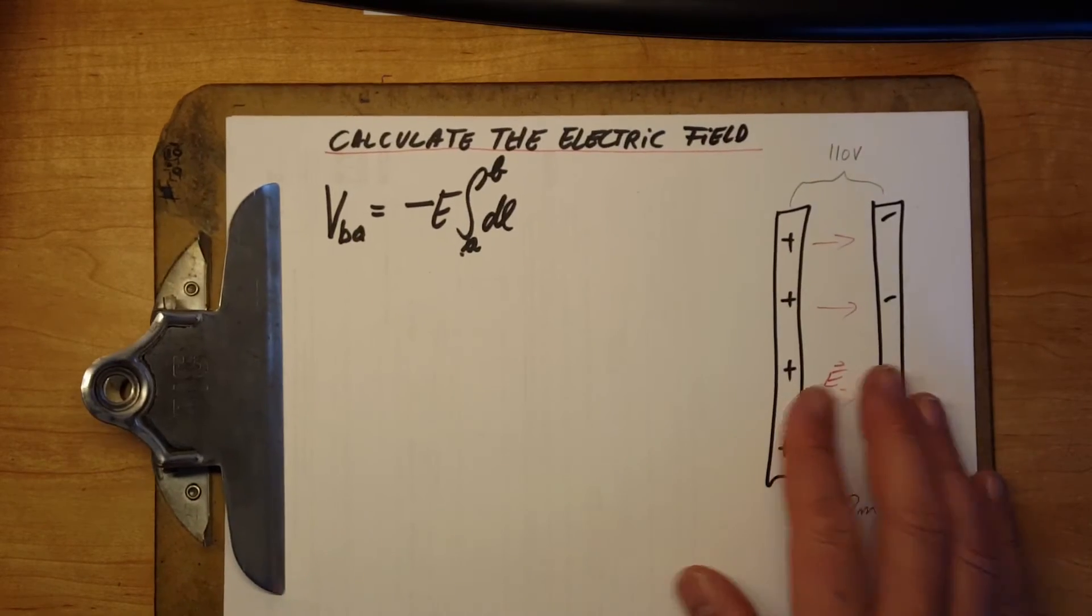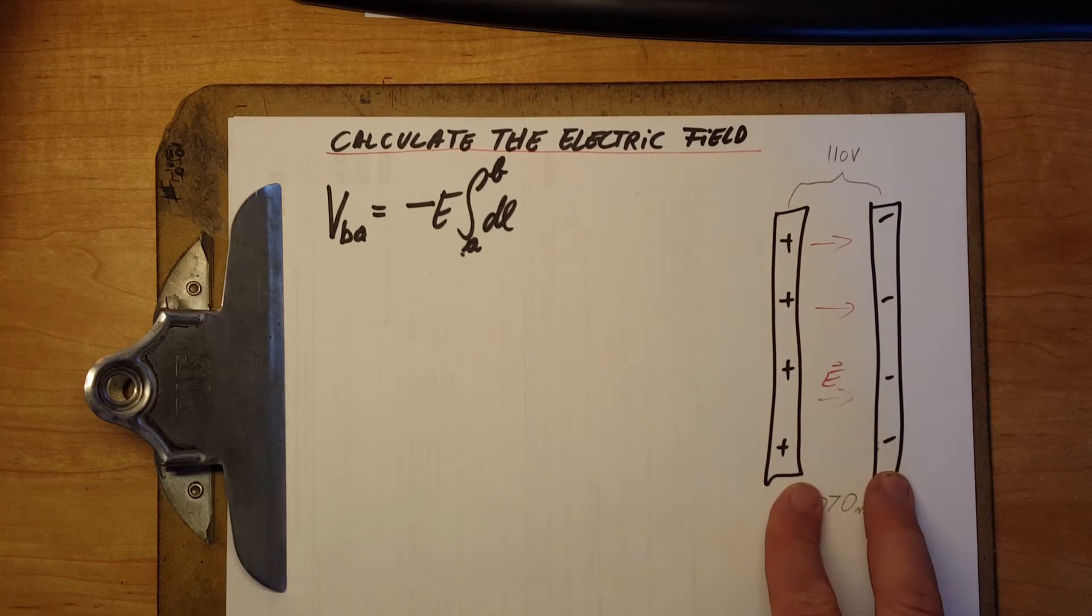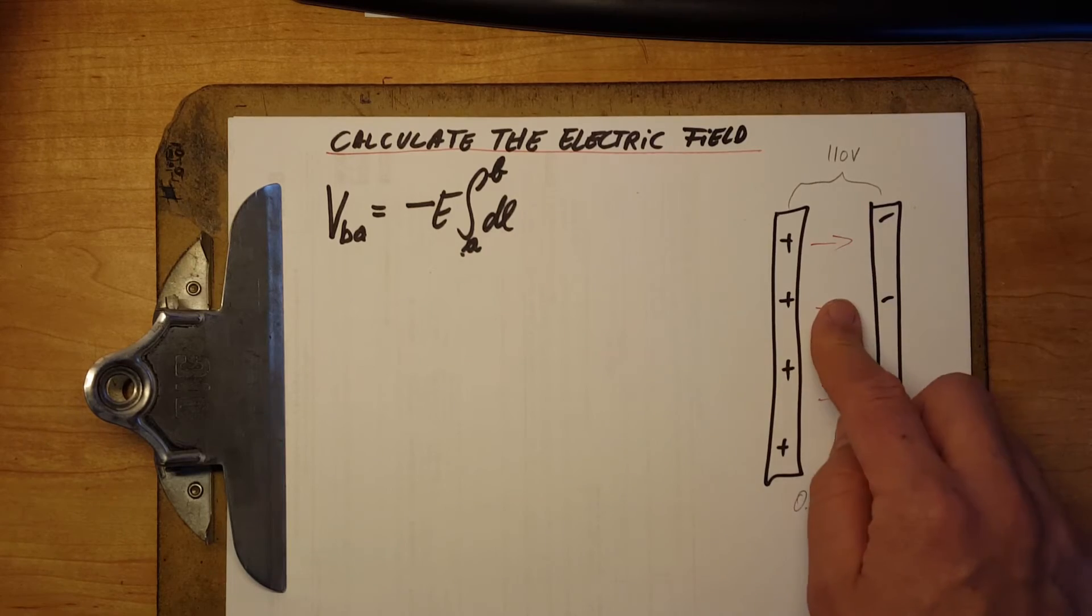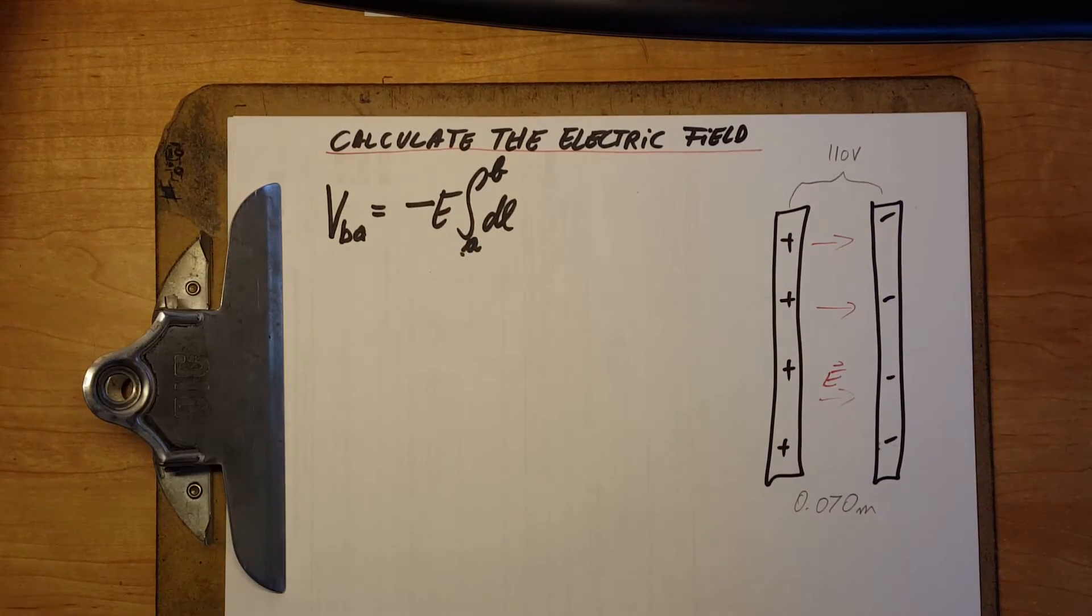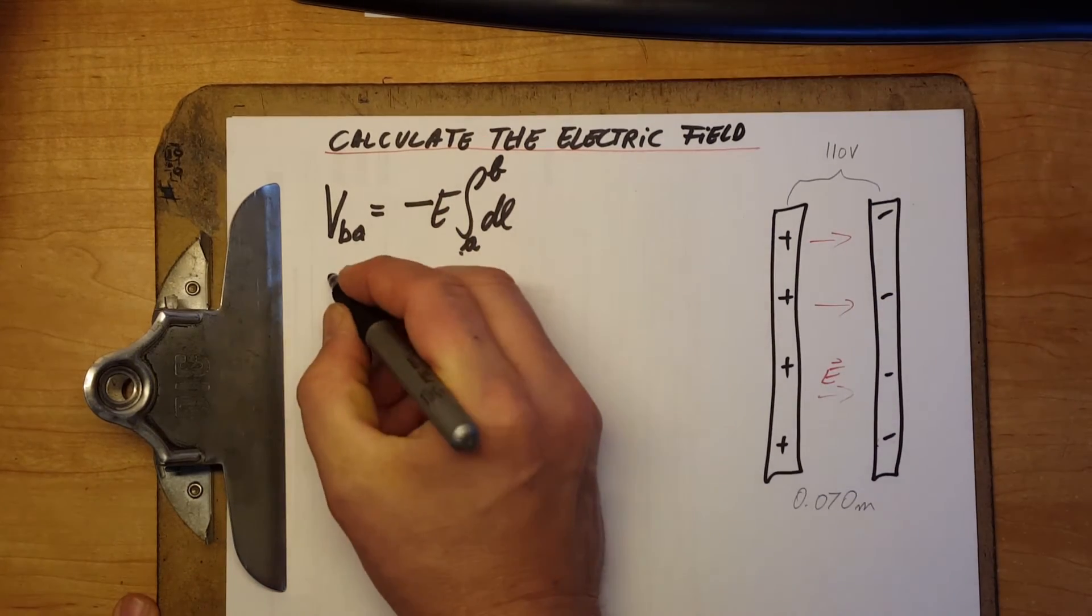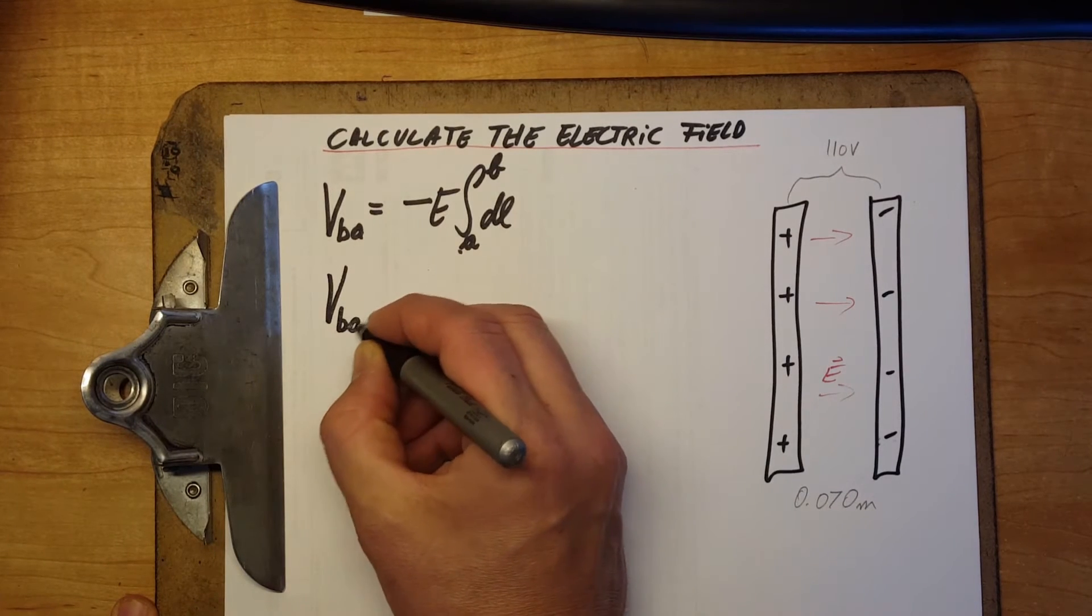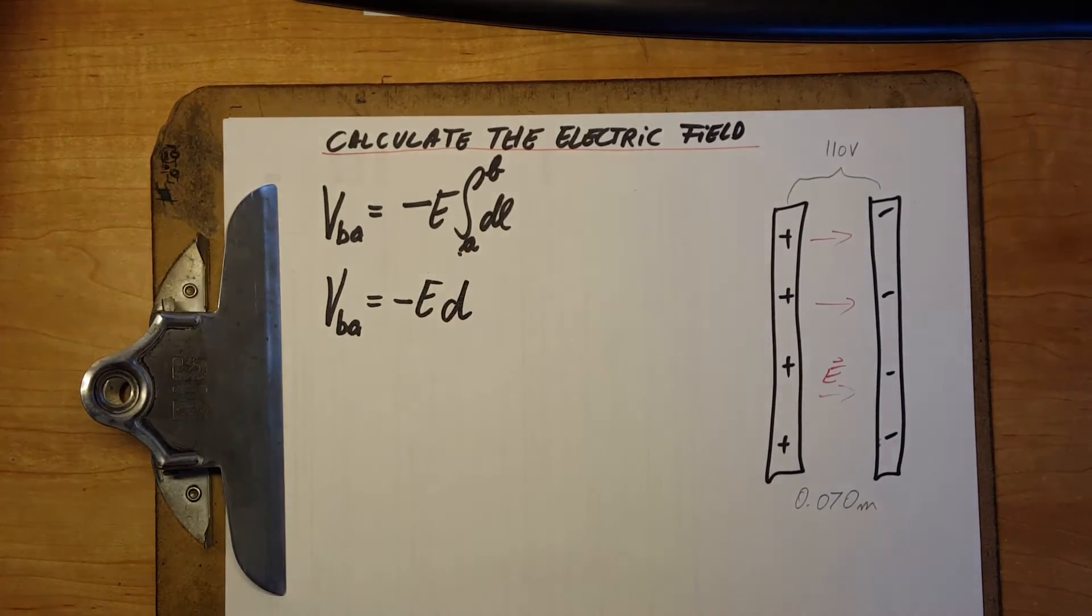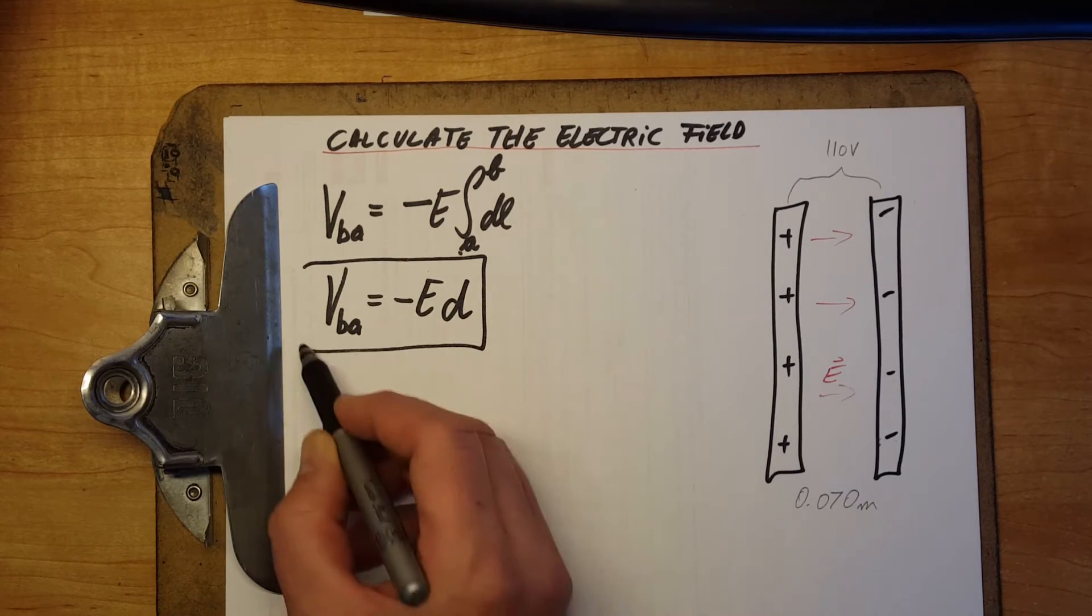But over here, if we notice, these are parallel plates and the electric field between them is uniform. So we can use the simpler version of this formula, which is VBA equals negative E D. And this is the one that we're gonna use here.